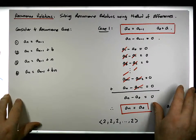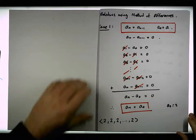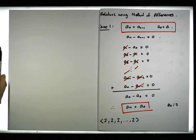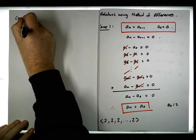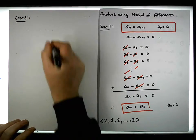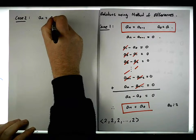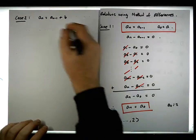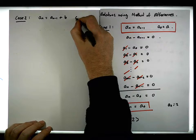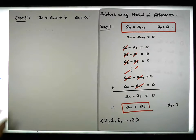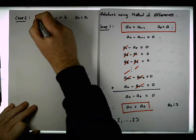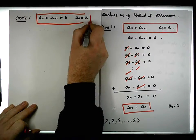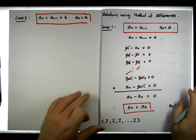What about our second case? The second case we're going to consider is a little bit more complicated. We're going to add in a constant value to the previous term. Case 2: a_n equals a_{n-1} plus some constant b, with base case a_0 equal to some constant a. We want to use our method of differences to find a closed form solution.